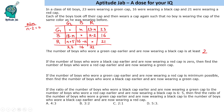Question 2: The number of boys who wore a black cap earlier and are now wearing a red cap is 0, meaning n equals 2. Find the number of boys who wore a red cap earlier and are now wearing a green cap. Substituting n equals 2: the red-to-green entry is n plus 5, which gives 2 plus 5 equals 7. The answer is 7.